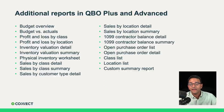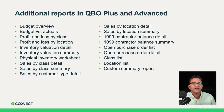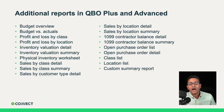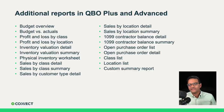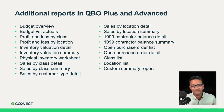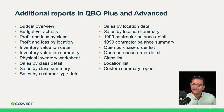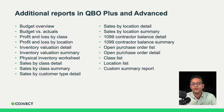Once your business starts growing, you're going to need more information. You'll need to do a budget versus actual so you understand where your business is versus where you planned it to be. Profit and loss by class or location lets you have multiple cost or profit centers and run full financial statements by that class or location. Inventory valuation reports and purchase order reports are also available because inventory and purchase orders require Plus or Advanced. Upgrading gives you more features and the corresponding reports.